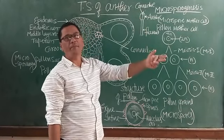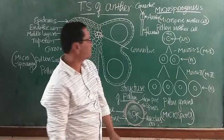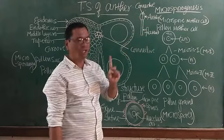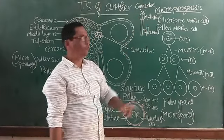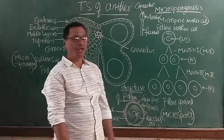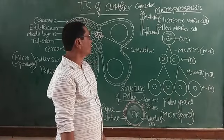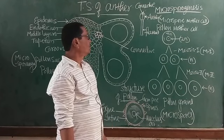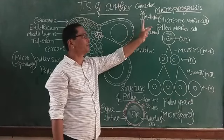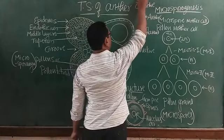In some plants such as China rose (Hibiscus), the anther is monothecous, consisting of only one lobe. In a monothecous anther, the connective is offset. These anthers are the fertile structures of a typical stamen.